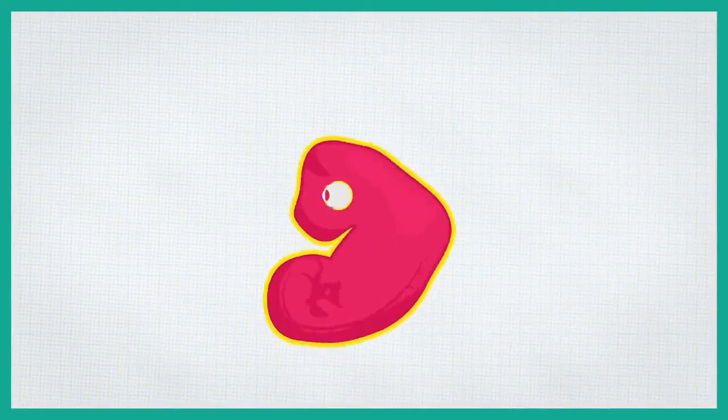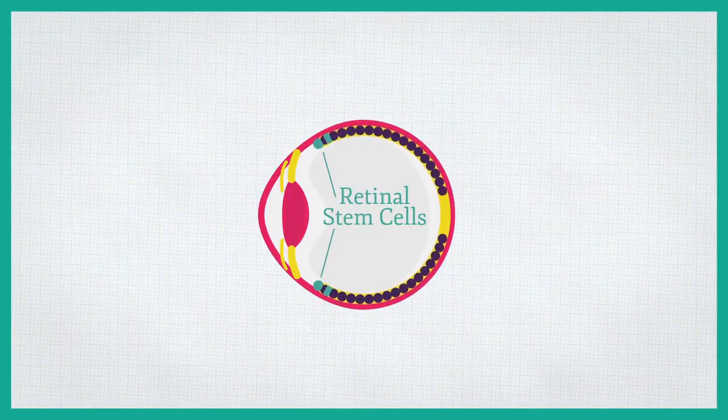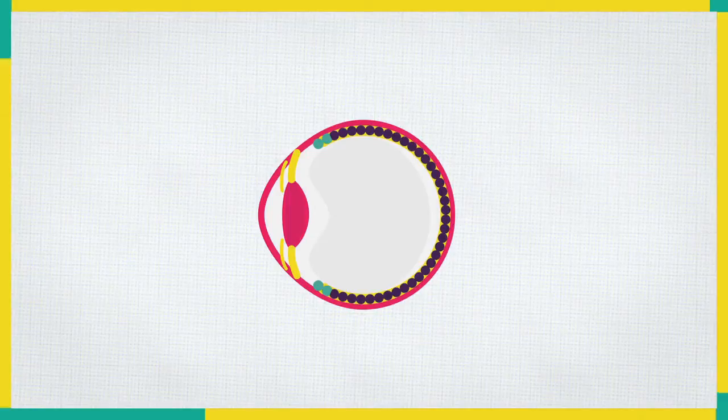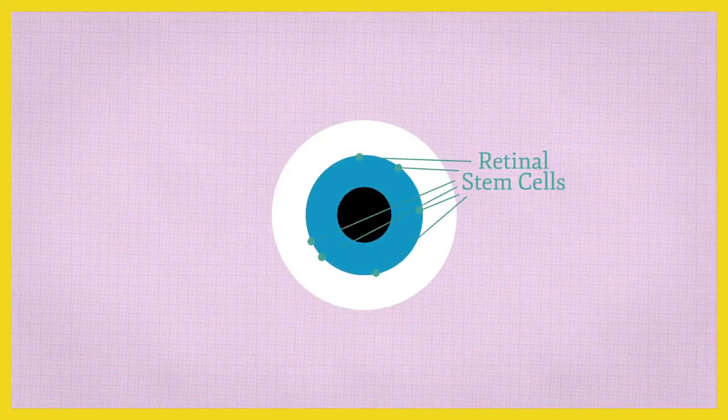During embryonic development, retinal stem cells produce all of the different cells in the retina. After we were born, however, retinal stem cells stop generating new cells and lie dormant in a ring that surrounds the iris.